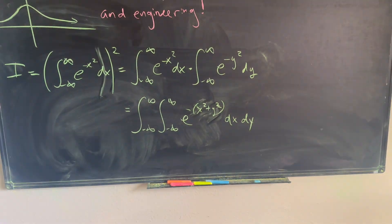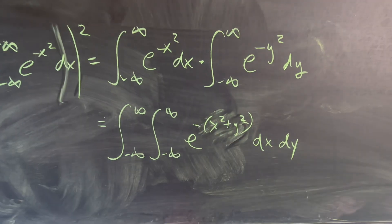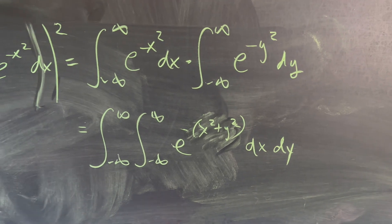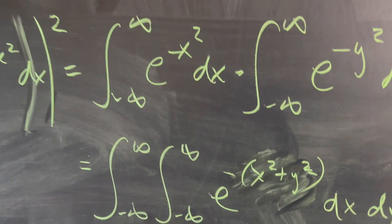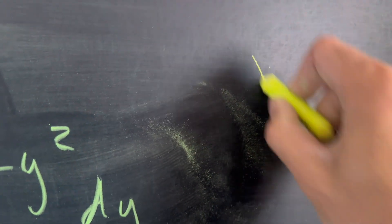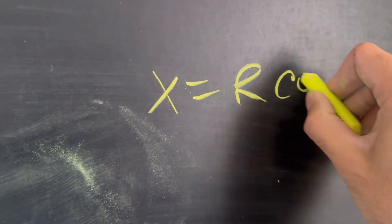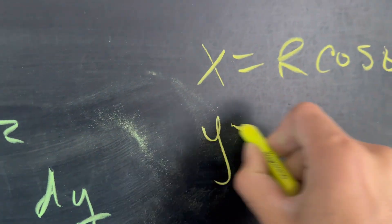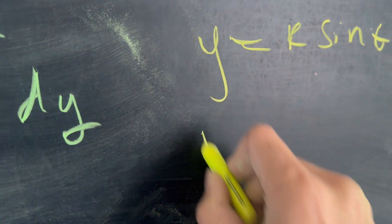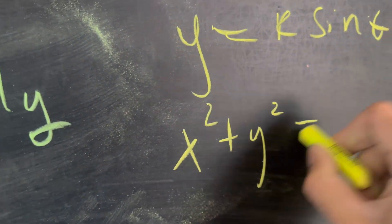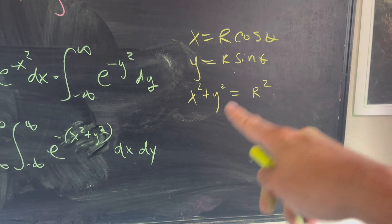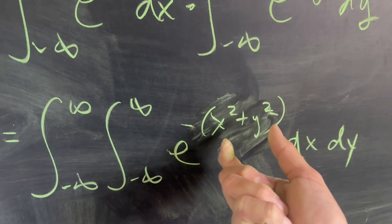I noticed that I needed a parenthesis there. We're going to change this into polar coordinates because I see x squared and y squared. We'll use the fact that x equals r cosine theta, y equals r sine theta, and x squared plus y squared equals r squared.